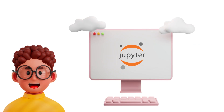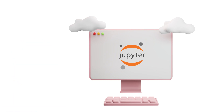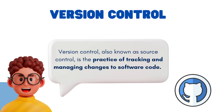Jupyter Notebooks may give us the freedom to try different experimentations and create prototypes. But once we find the best model and want to take it into production, we need to take into account some considerations. First, we need to version control our code, which is the practice of tracking and managing changes to software code. Version control systems allow multiple developers and team members to work together on the same project, helping them work smarter and faster.